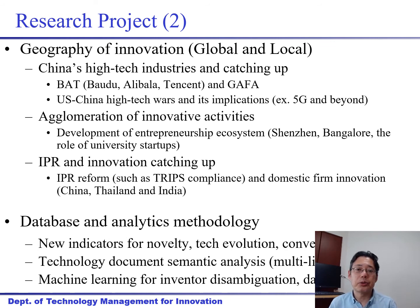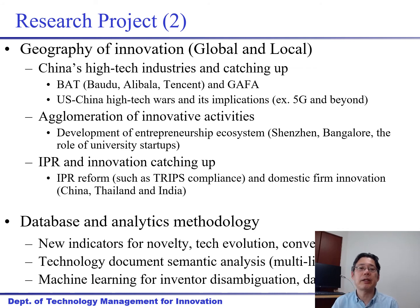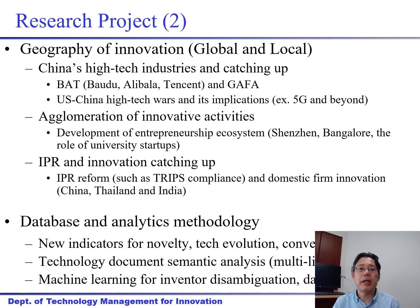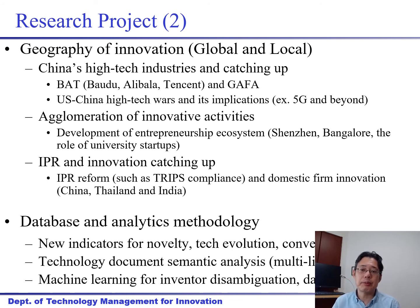We have a database and analytics methodology area. Our focus is to come up with new indicators for innovation — for example, among all the patents, which patents are more novel or have higher creativity, and how to come up with those indicators. Behind this, we try to use a lot of machine learning and NLP — natural language processing — techniques. Sometimes when we create databases, we use machine learning for inventor disambiguation or database linkages.